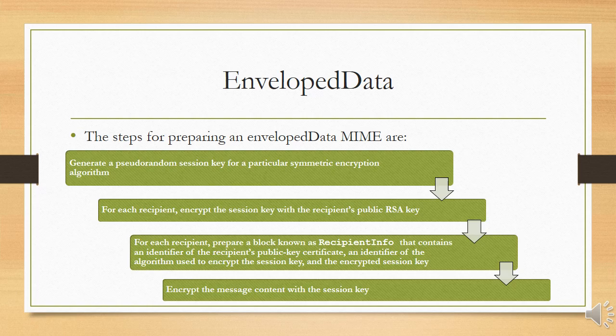The envelope data — an application/PKCS7-MIME subtype — is used for one of four categories of S/MIME processing, each with a unique S/MIME type parameter. In all cases the resulting entity, referred to as the inner object, is represented in a form known as Basic Encoding Rules (BER), defined in ITU-T Recommendation X.209. The BER format consists of arbitrary octet strings and is therefore binary data; such an object should be transfer encoded with Base64 in the outer MIME message.